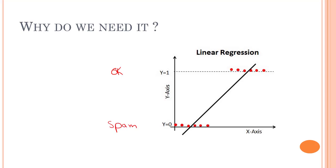Y equals one stands for the okay emails and spam emails stand for Y equals zero. Y equals one is our positive class and Y equals zero is our negative class. If we build a linear regression model, it gives us continuous values.